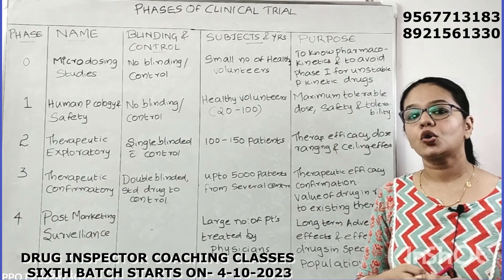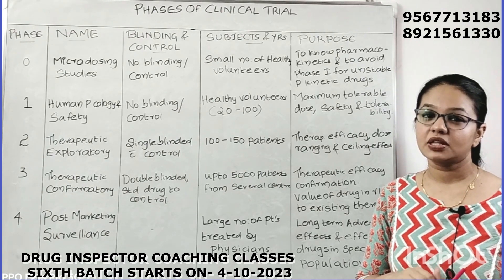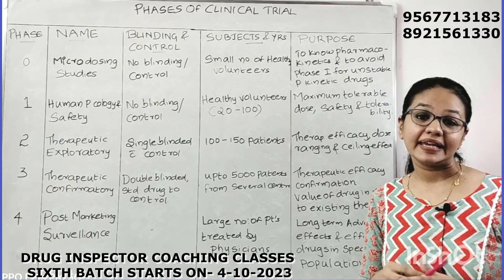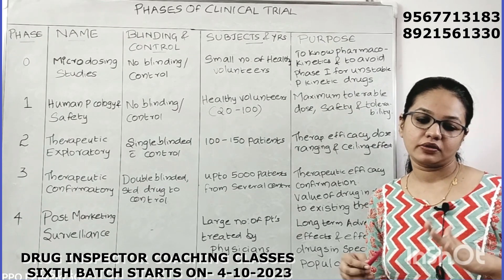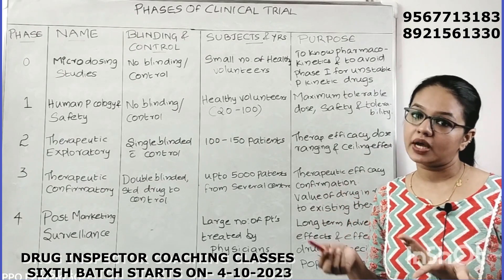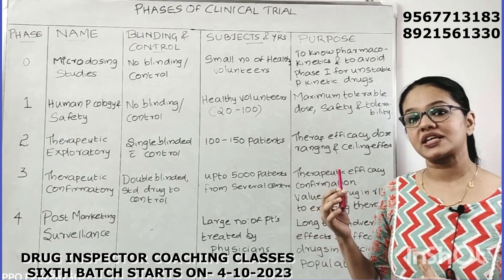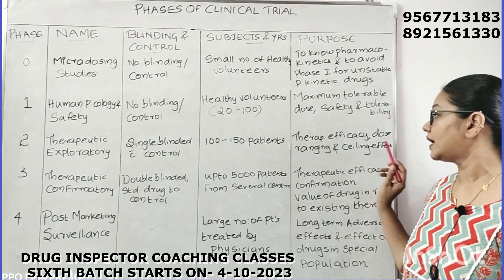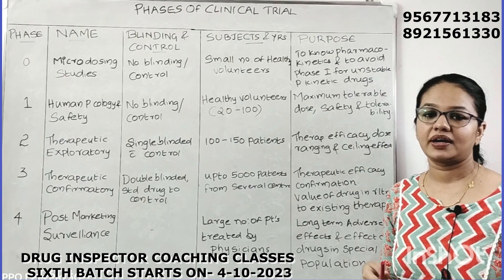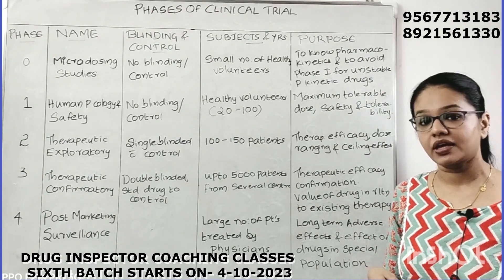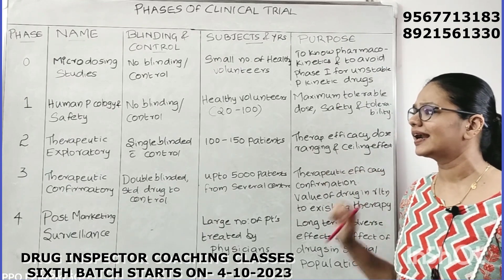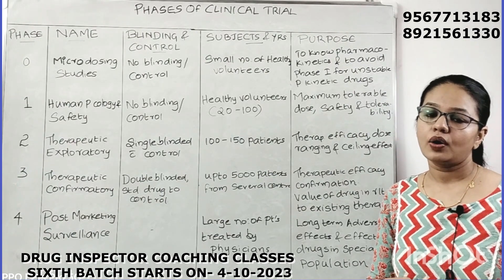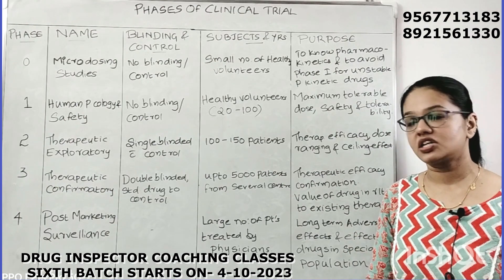In Phase 2, we also look at dose ranging and the ceiling effect of the drug. The ceiling effect means the maximum dose at which the maximum efficacy is obtained — this is what we call the ceiling dose. So in Phase 2, we find out the therapeutic efficacy, the safe dosing range, and the ceiling effect of the drug.